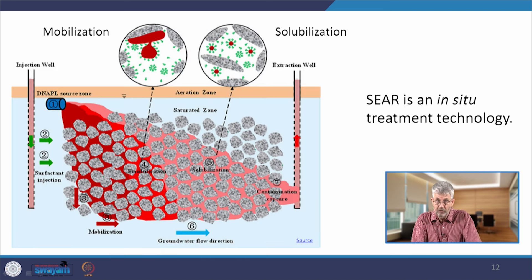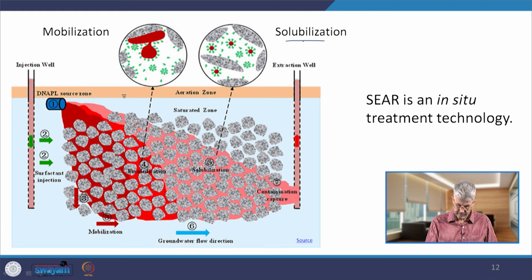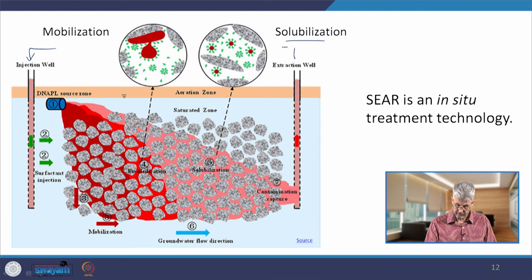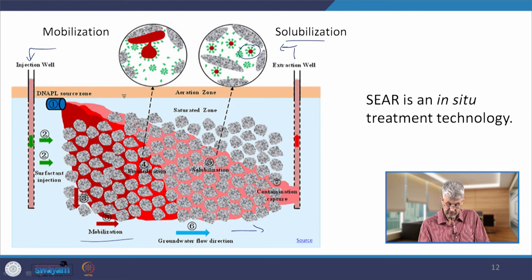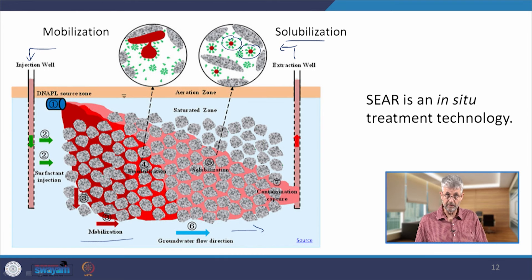If we zoom in, you can see the different processes at work. The solubilization part is at the leading edge of the injected plume — here is where the surfactant is injected, and here is where the solution is extracted after flushing through the aquifer. The injected surfactant concentration begins to solubilize contaminants by forming micelles above the critical micelle concentration, thereby increasing the solubility of contaminants previously trapped in the pore space or adhering to the surface of the aquifer sediments.